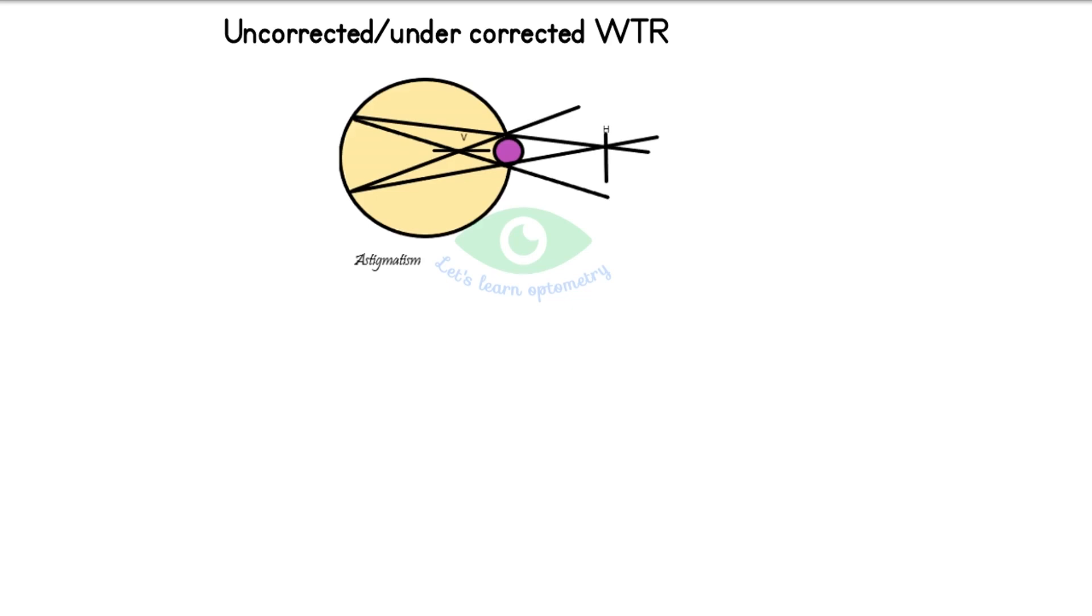Whereas rays of light traveling in the horizontal meridian will form the vertical focal line. Most of the textbooks mention in terms of focal lines. I will be explaining in terms of meridians for your easy understanding.